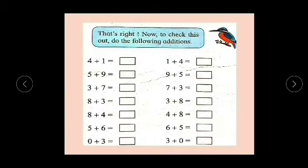Now to check this out, do the following additions. So then now we are going to try different methods to carry out addition. So pay attention properly. Now first method: 4 plus 1. You can draw: 1, 2, 3, 4, plus 1. And you can count 1 by 1: 1, 2, 3, 4, 5. This is one method. 4 plus 1 is 5. 1 plus 4 is also 5.